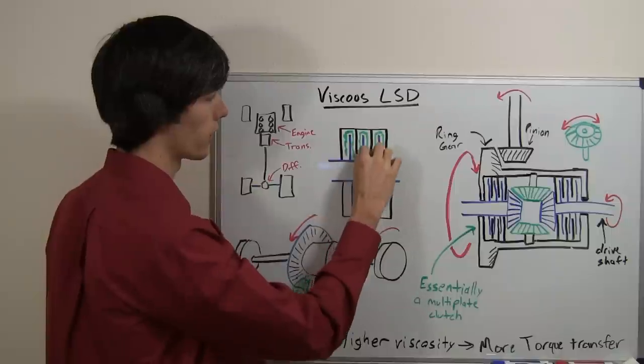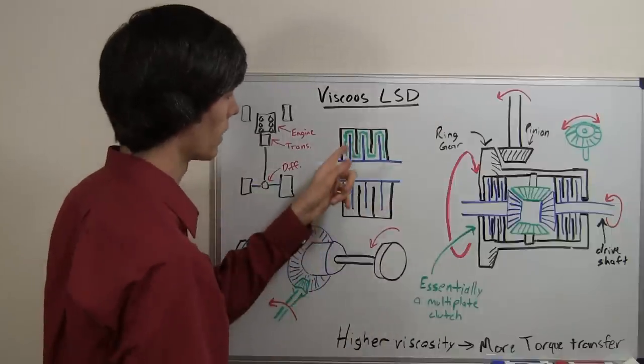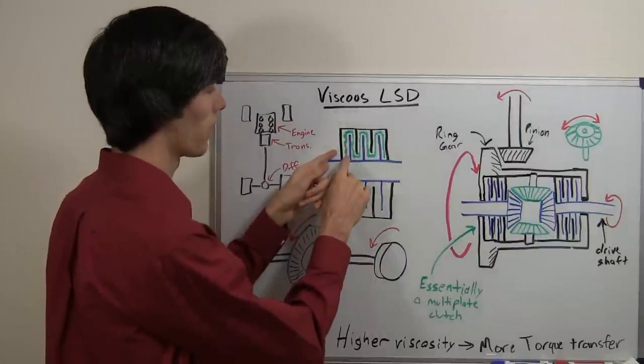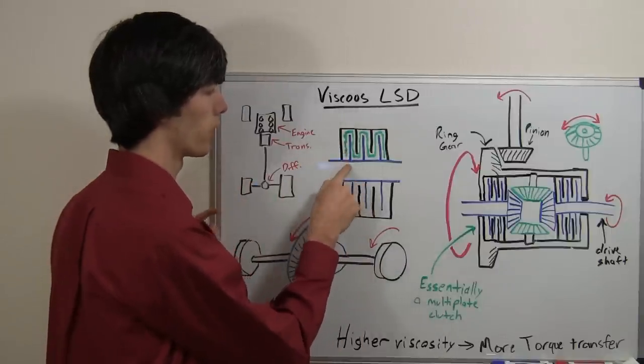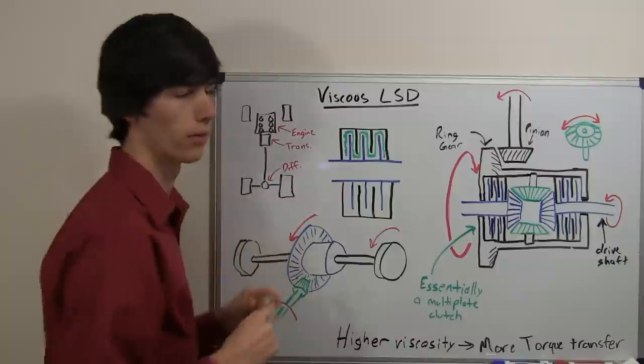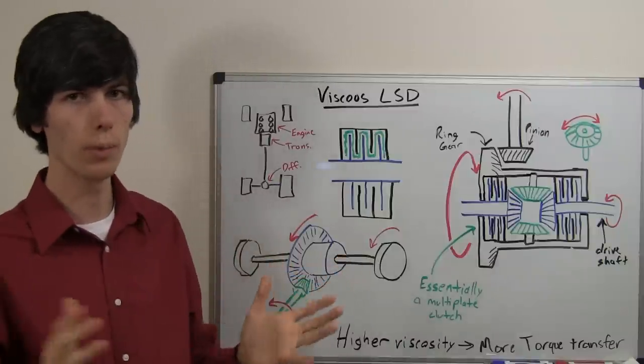And within that you've got this viscous liquid. So that liquid creates friction if the drive shaft is rotating at a different speed than the differential housing. So when would that happen?